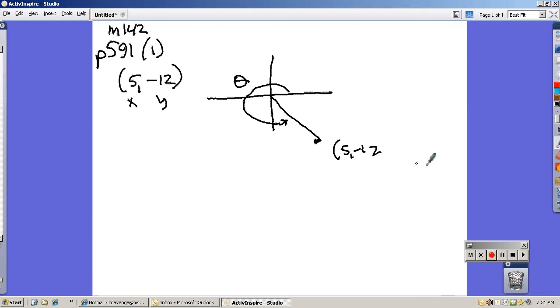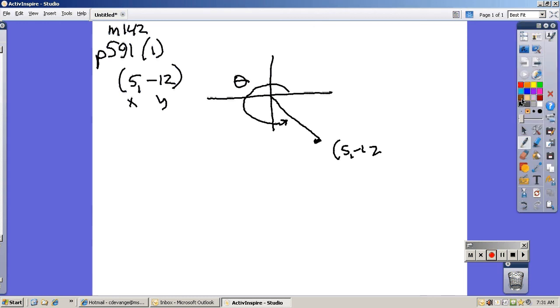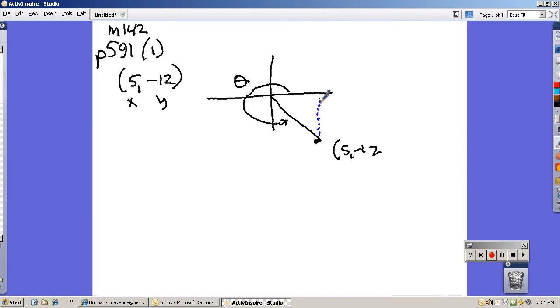And now if I think about kind of a right triangle that could be formed by this: x is 5 so it goes over 5, y is -12 so it went down 12, and then what I need to do is figure out how long this radius is.